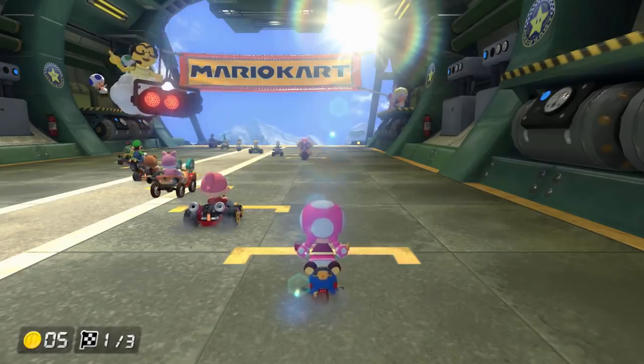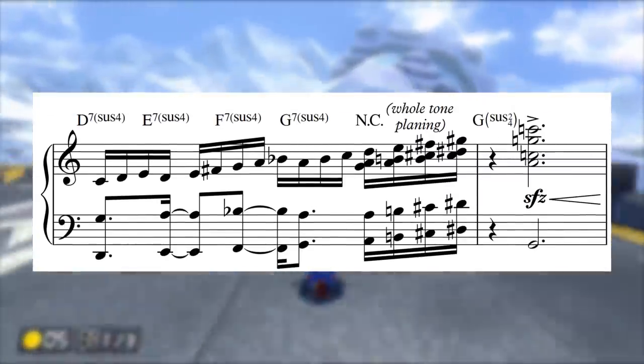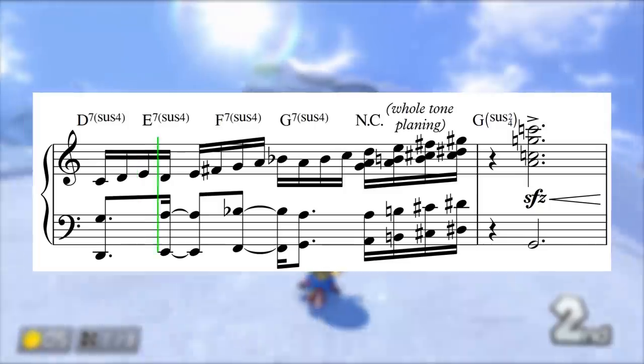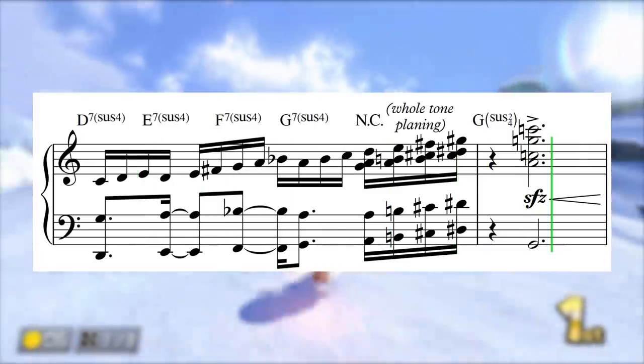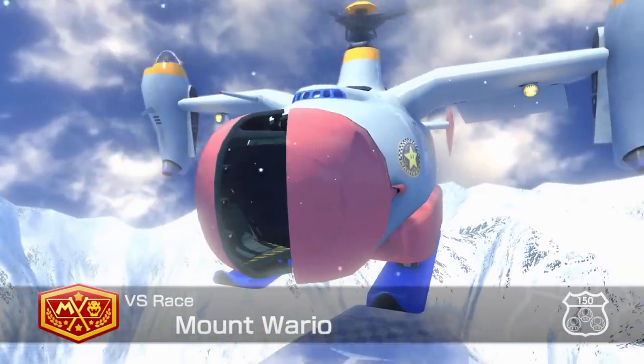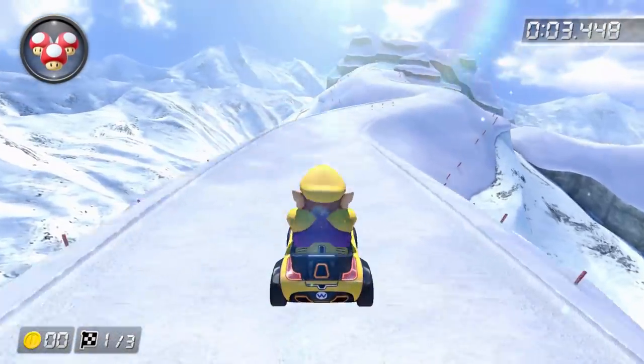After the 3-2-1 countdown, the intro immediately gets things moving, with the 16th note figure rocketing up before landing on this big shot on beat 2 of the bar. The racers all start in this big airplane-copter thing, blasting out into the air on cue before landing on the snowy mountain peak.